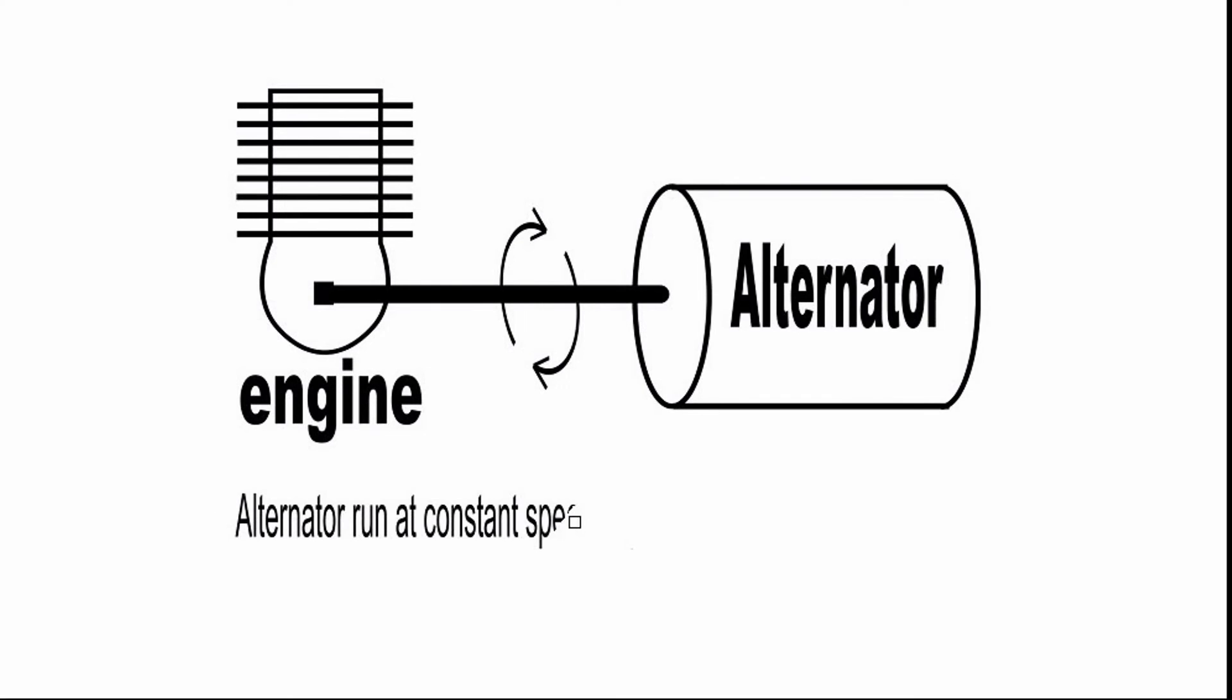A conventional generator is nothing more than an engine connected to an alternator and run at constant speed to produce desired AC frequency.